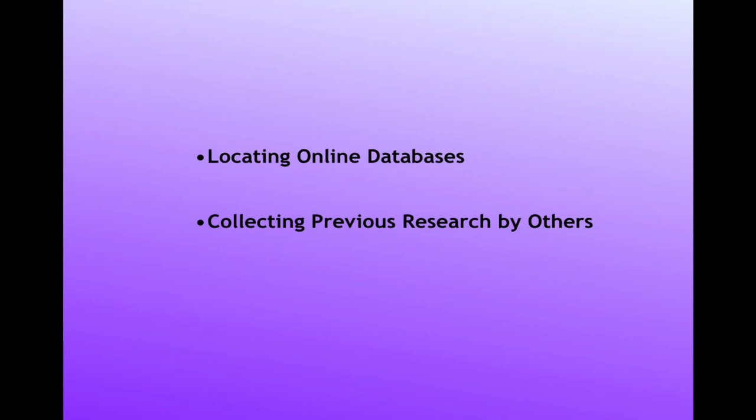The Wiki Online Genealogy Records pages are meant to cover collections for an entire state or an entire country. There are other online records that are not included in these pages — for example, online collections for counties or towns, online published books, and online collections of family group records compiled by other genealogists.